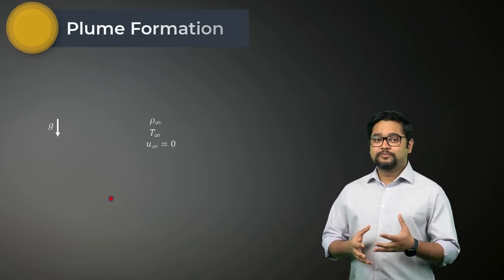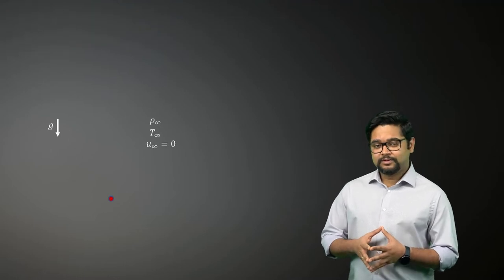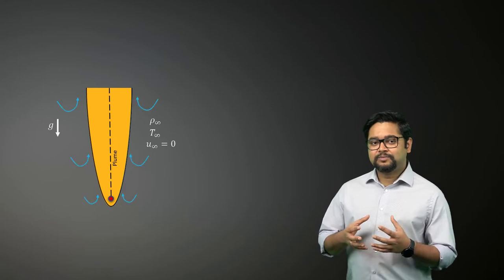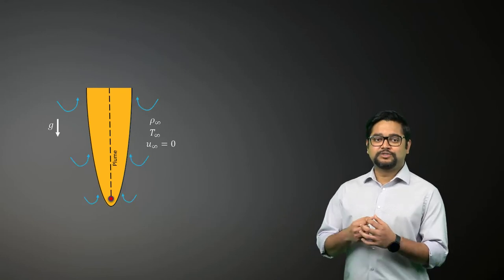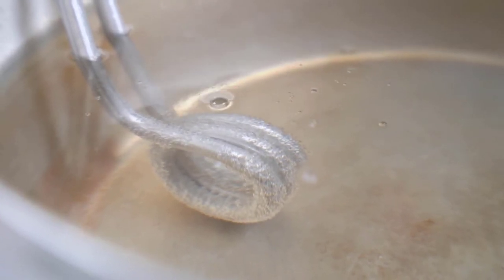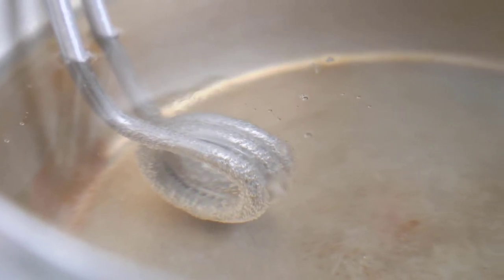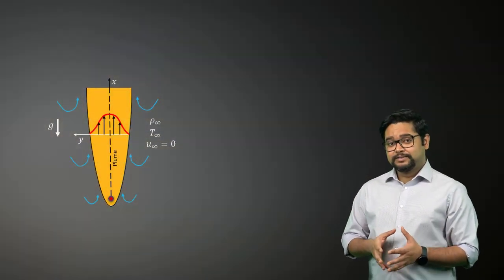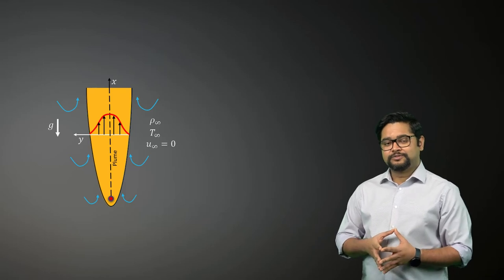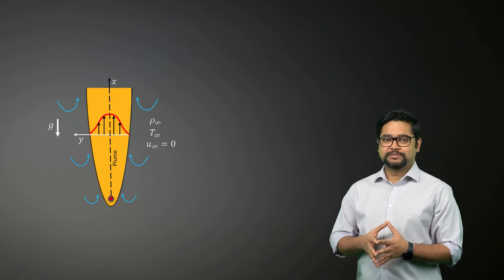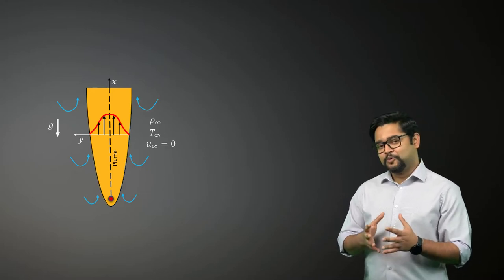A plume is formed from the fluid rising from a heated object submerged in a quiescent fluid. The hot fluid rises due to the buoyancy forces and entrains more fluid from the quiescent region. The plume formed from a hot immersion water heater is a good example of this type of natural convection flow. The width of the plume increases with distance from the heated object. However, the plume itself eventually dissipates due to viscous effects and reduction in the buoyancy forces.